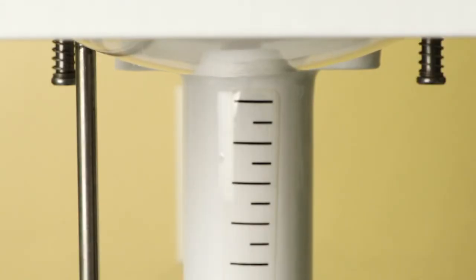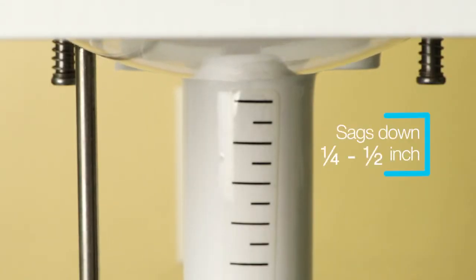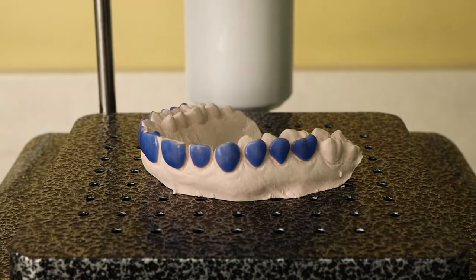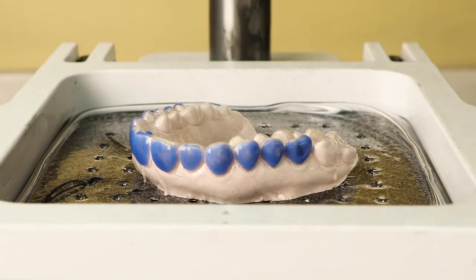With vacuum former, heat the tray material until it sags down approximately 1/4 to 1/2 inch. Activate the vacuum and adapt the softened plastic onto the model.